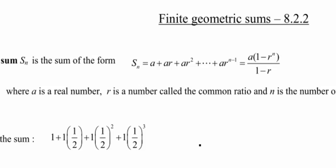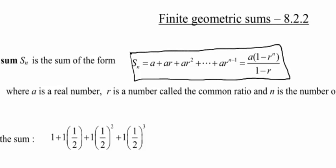S sub n equals a plus a times r, plus a times r squared, dot dot dot, all the way up to a times r to the n minus 1. And this sum is defined by the equation a times 1 minus r to the n all divided by 1 minus r.